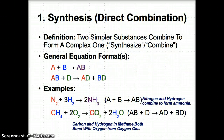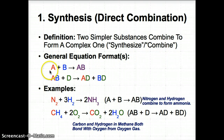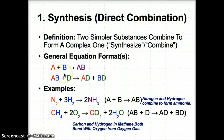Now let's talk about the first type of reaction: synthesis, or direct combination. This means that two simpler substances combine to form a more complex one. To remember this, think of the word 'synthesize,' which means to produce something or combine. The most common general equation format to memorize is A + B → AB, where A and B are simple substances combining to form the more complex AB.